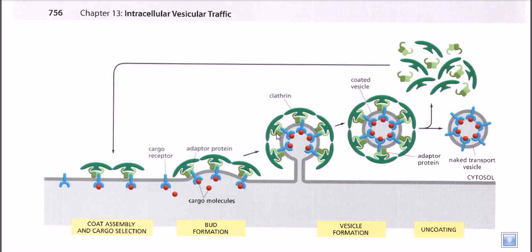Not only clathrin molecules do this — there are also supporting proteins that help build up this strain and finally cleave the vesicle out from the cell membrane. One such protein is dynamin. The cell secretes dynamin, which sits at the neck of the vesicle-forming unit, increasing the strain. Finally, after sufficient strain, the vesicle bulges out from the cell membrane and we have a fully grown clathrin-coated vesicle formed.